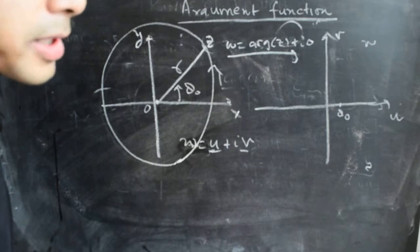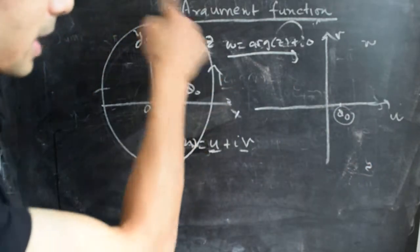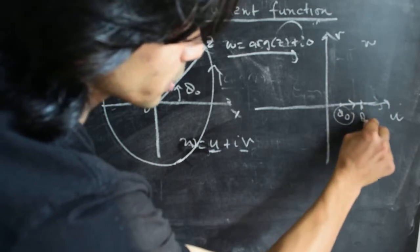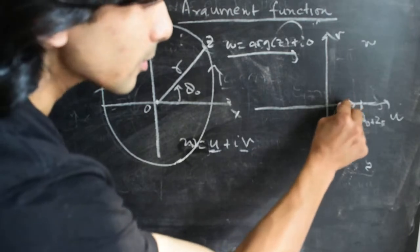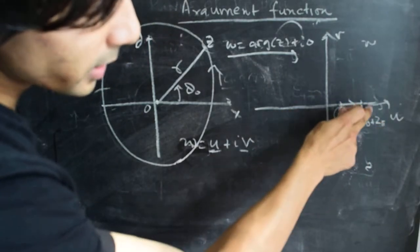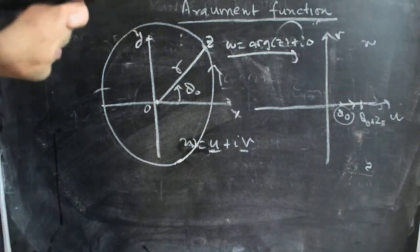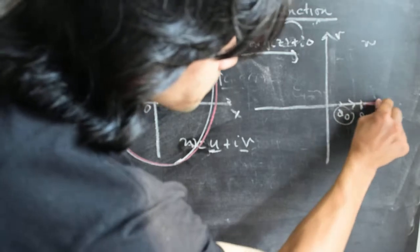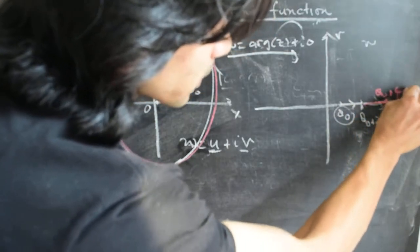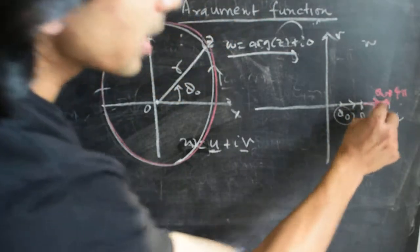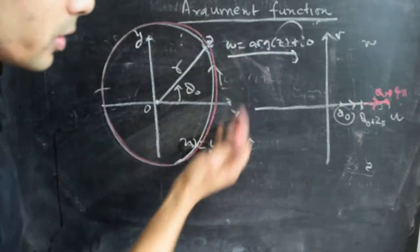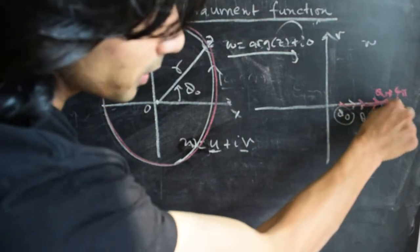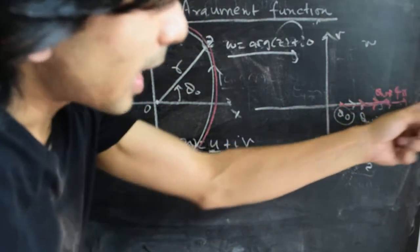Since w = arg(z) + i·0 and we started at θ₀, by the time we wind around the origin once and return to z, the argument has increased by 2π, so it is now θ₀ + 2π. We have moved along the u-axis from θ₀ to θ₀ + 2π. If we make another loop, we arrive at θ₀ + 4π. Continuing in the counterclockwise direction, if we begin at θ₀ we continuously move away on the real axis and never come back to θ₀.